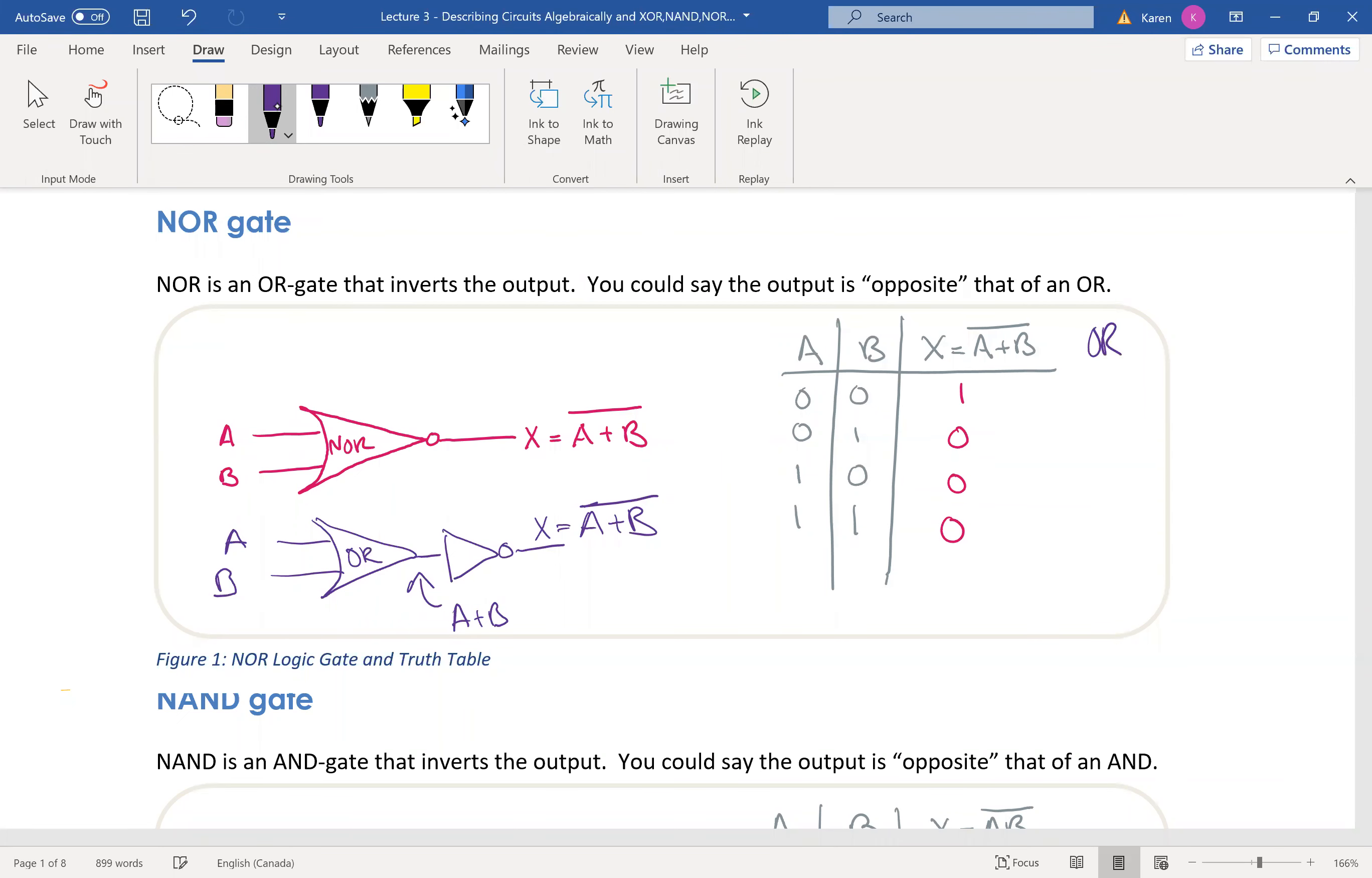An OR gate would have been a 1 if one of the outputs is 1, or another one is 1, or they're both 1. Otherwise it's a 0. So you can see that a NOR is somewhat the opposite of an OR gate.